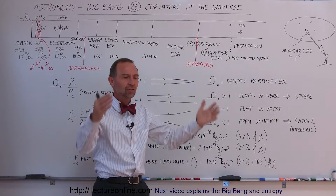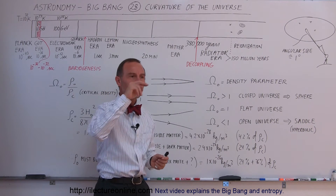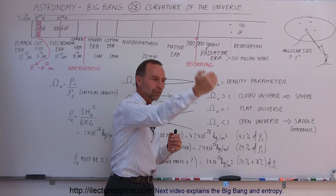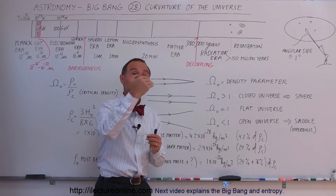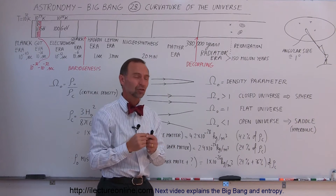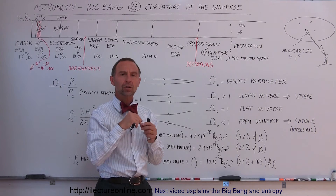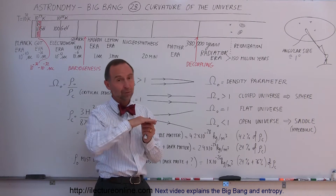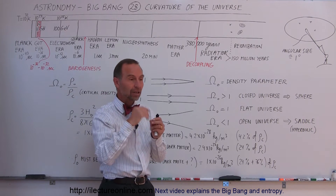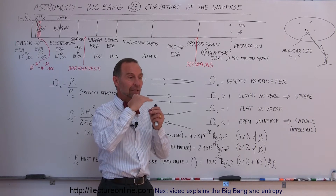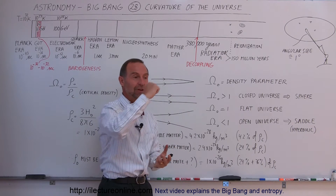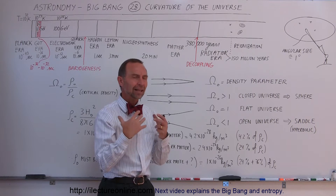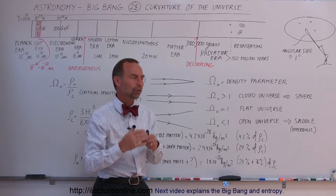The universe looks like a sphere, so if you set off in one direction, the curvature of the universe would be such that you'd probably end up in the same place as you started — kind of like an ant walking across the earth. If the ant just kept on walking and there weren't any oceans, eventually the curvature of the earth would bring the ant back to the very same place it started. That's kind of the way we think of a closed universe.